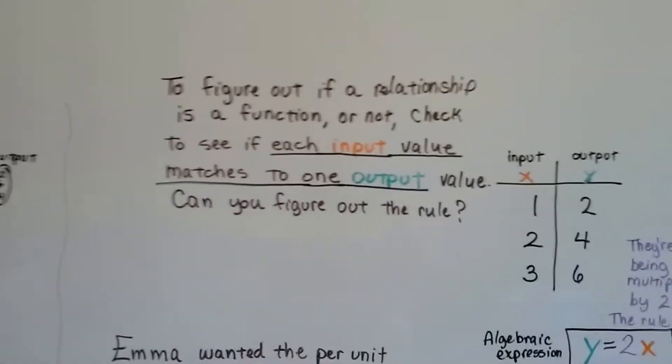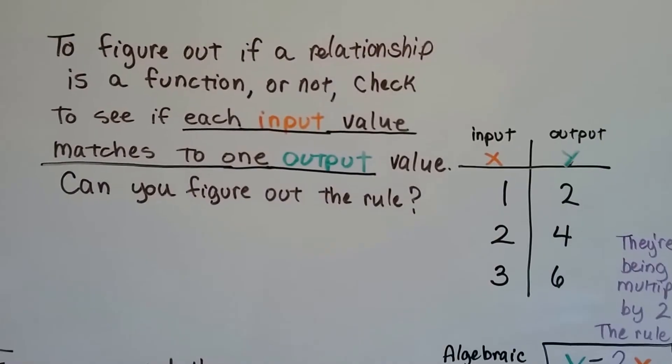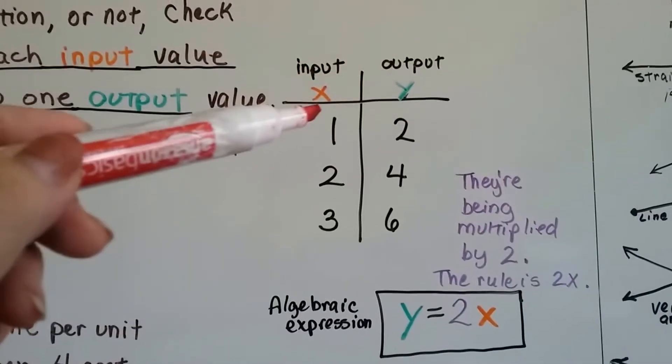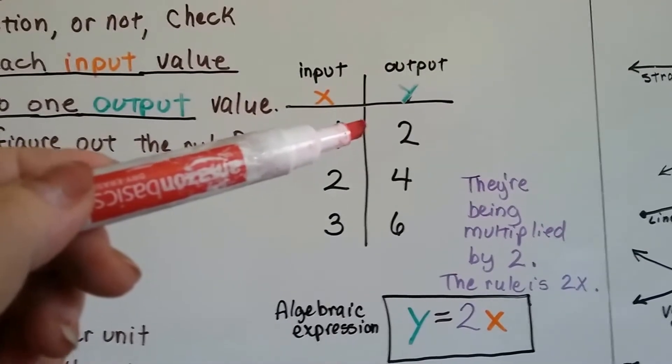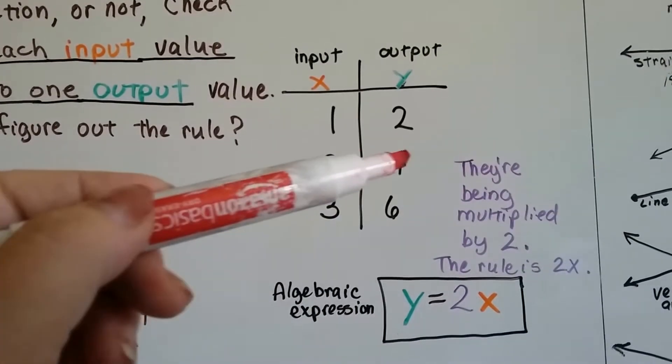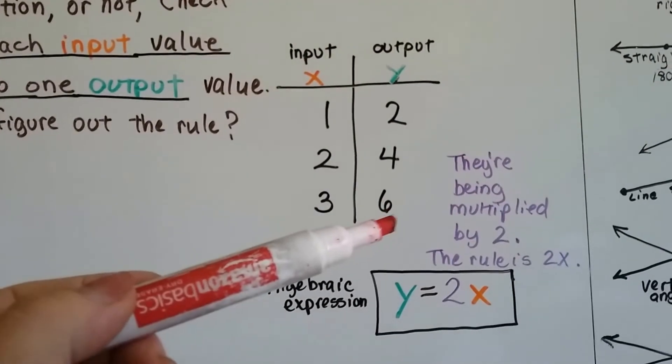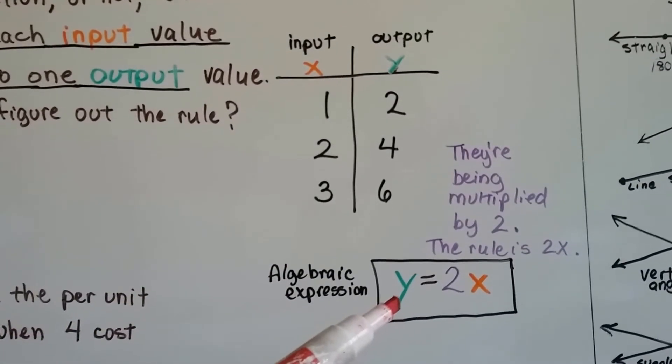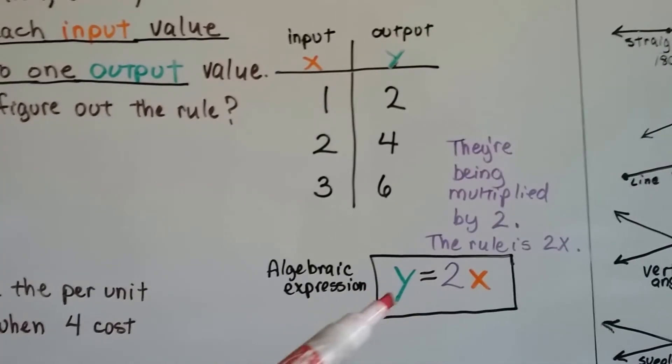To figure out if a relationship is a function or not, check to see if each input value matches one output value. Can you figure out the rule? So look at this one. If the input is 1, the output is 2. So the rule might be plus 1, but look, the input is 2, now the output is 4. It doubled. Now the input is 3 and the output is 6. So they're being multiplied by 2. The rule is 2x. So we've got y equals 2x as our algebraic expression. That is the function.